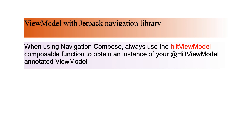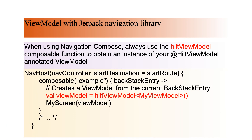With the Jetpack Navigation library, when using Navigation Compose, always use the hiltViewModel() composable function to obtain an instance of your Hilt-annotated ViewModel. As shown in this example, if MyScreen is a destination in the navigation graph, we call hiltViewModel() to get an instance of MyViewModel scoped to that destination.